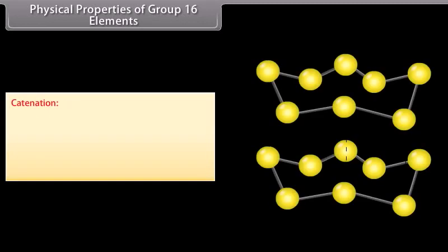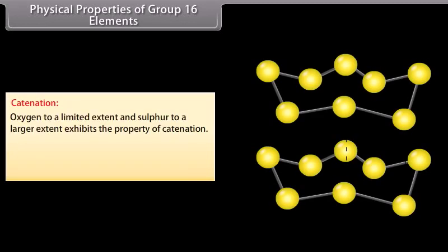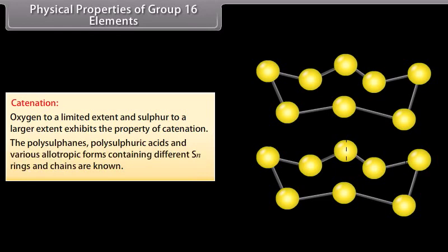Physical properties of group 16 elements. Oxygen to a limited extent and sulfur to a larger extent exhibit the property of catenation. The polysulfanes, polysulfuric acids and various allotropic forms containing different S-n rings and chains are known. The sulfur-sulfur bond is very important in biological systems and occurs in proteins and enzymes.